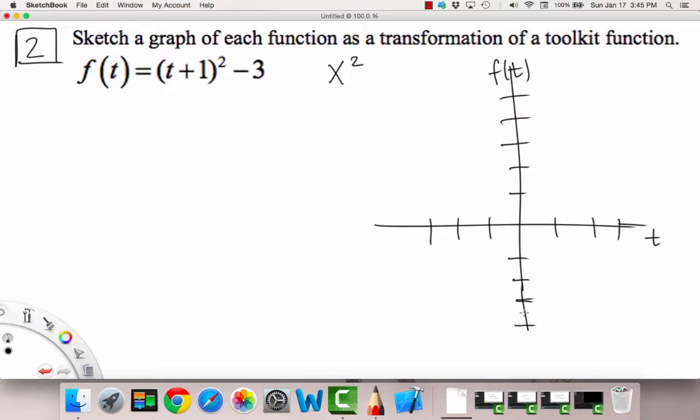We have something like this, and so our normal graph, our normal x squared graph, or t squared in this case, would look like our usual u. Let me just graph that real quick. Here's our u, and it goes up like that and opens upward. This is our normal x squared or t squared or whatever you want to call it.